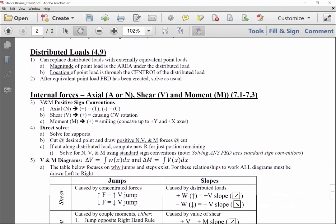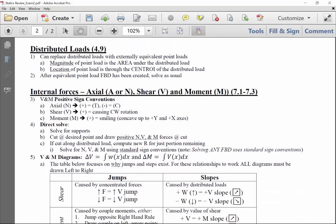A natural next step from centroids is jumping back to section 4.9 and thinking about distributed loads. Distributed loads are looking at if we have a force that is distributed over a length. In this framework, we only looked at two-dimensional distributed loads. Realize they could also be distributed over a third dimension, basically over an area as well. We can replace the distributed load with externally equivalent point loads, where the magnitude is the area under the load, and the location is through the centroid of the distributed load. After this equivalent point load free body diagram has been created, then we're back to solving with our standard sum force X, sum force Y, sum moment on a three-dimensional body.